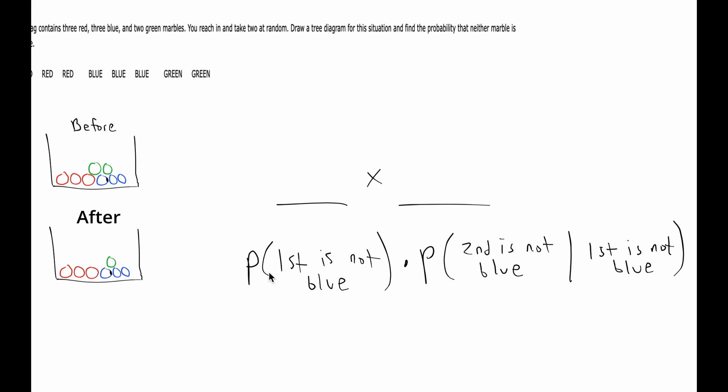All right, so the first one not being blue, I count five successes for that: one, two, three, four, five successes. So it's going to be five out of eight for the first not being blue.